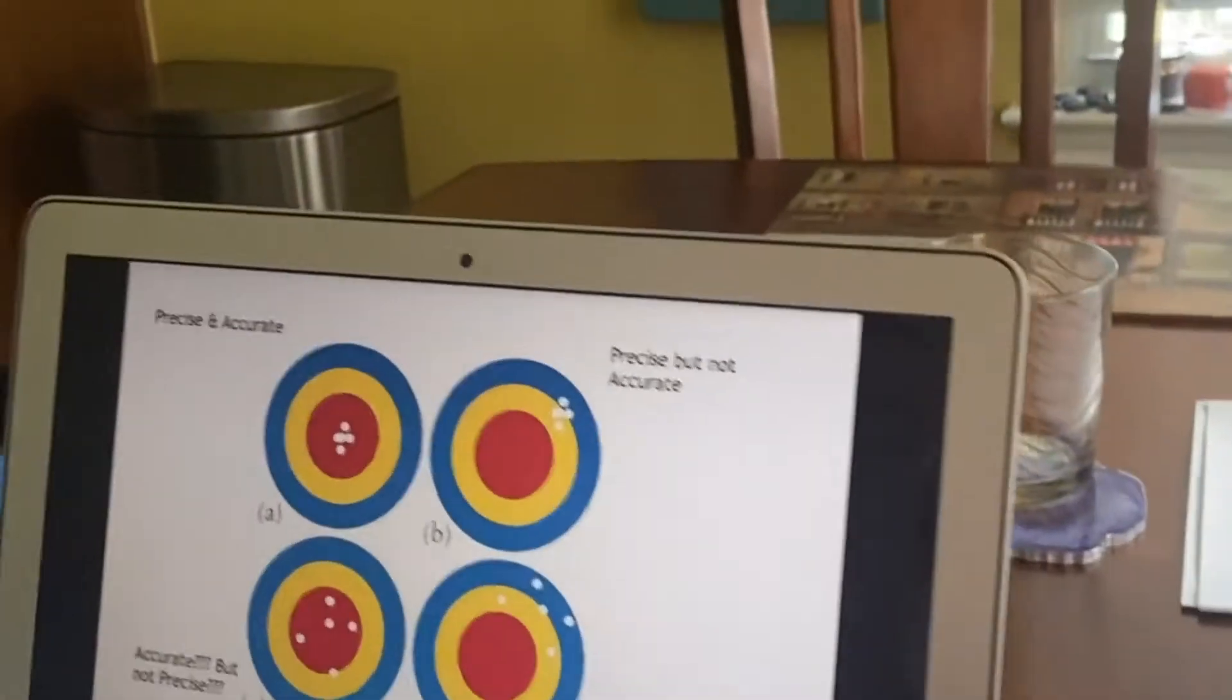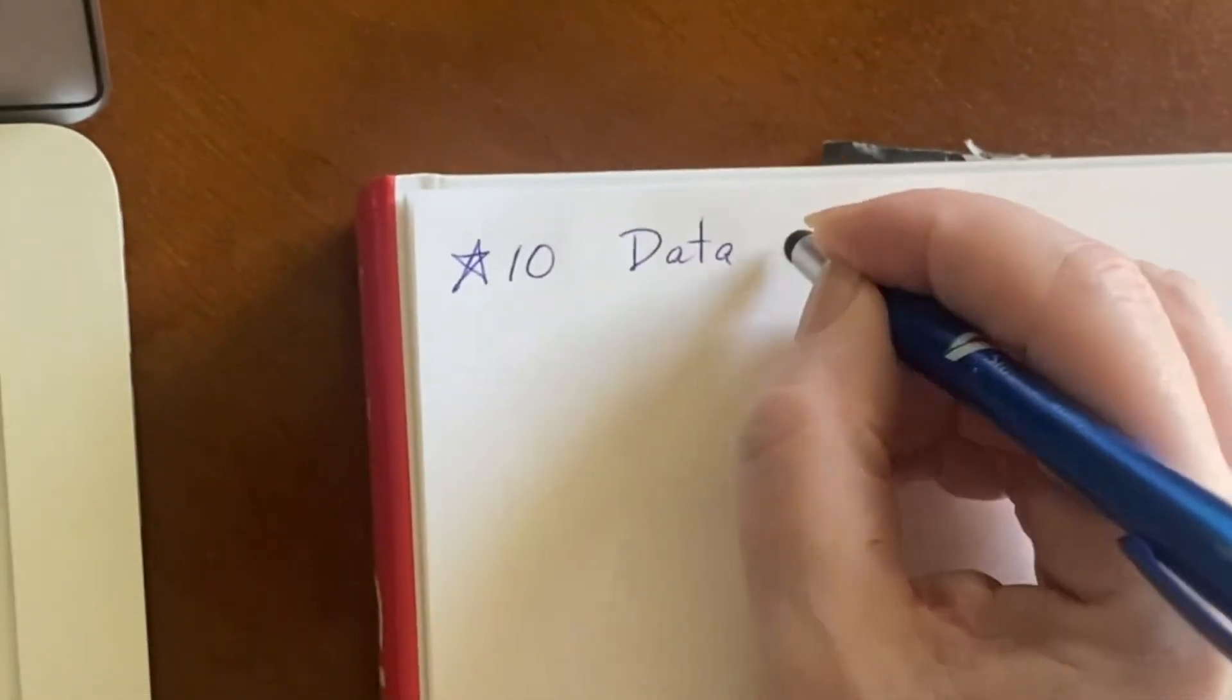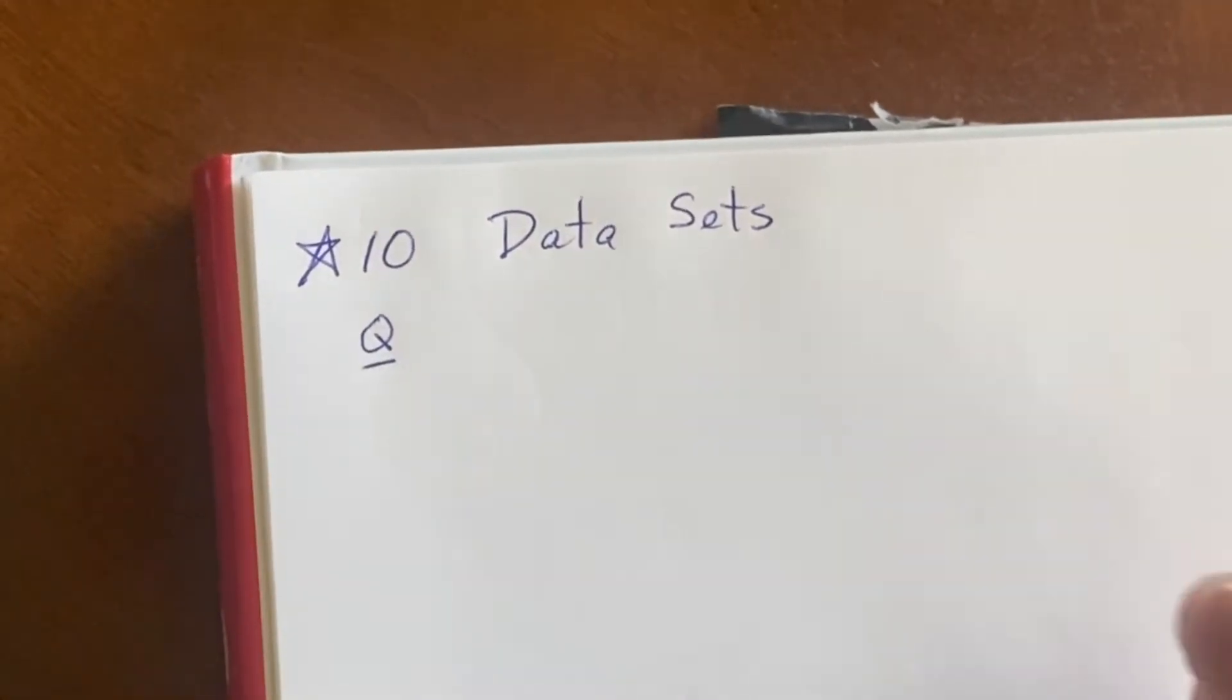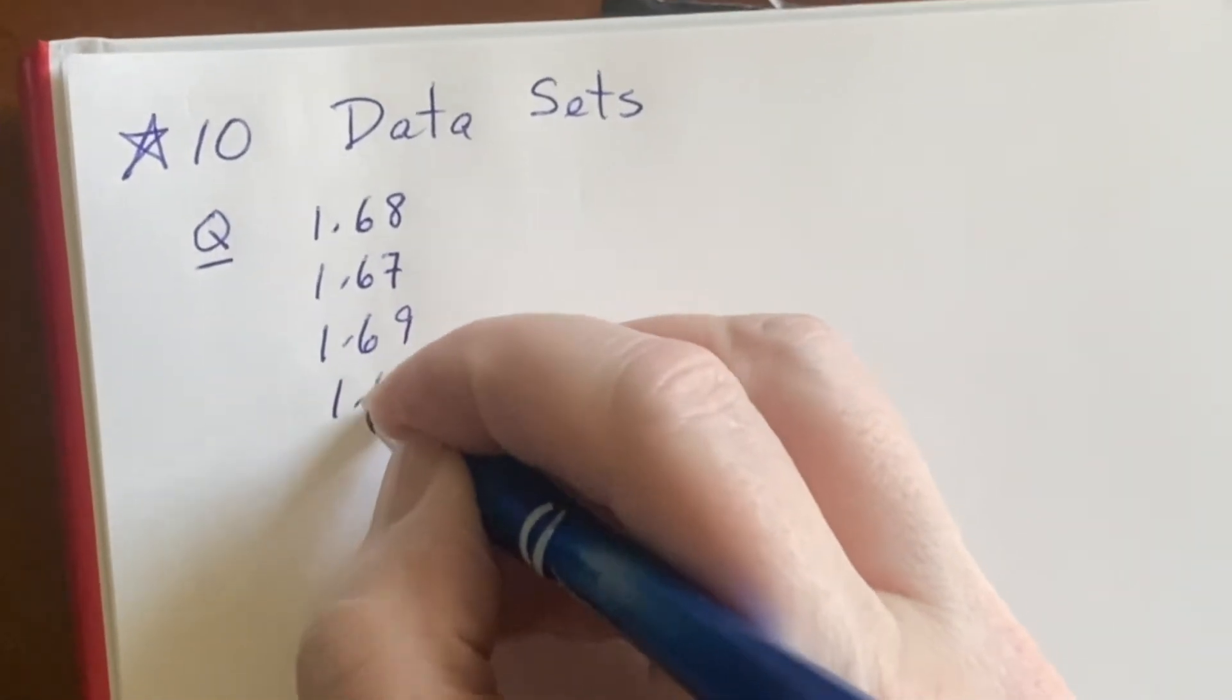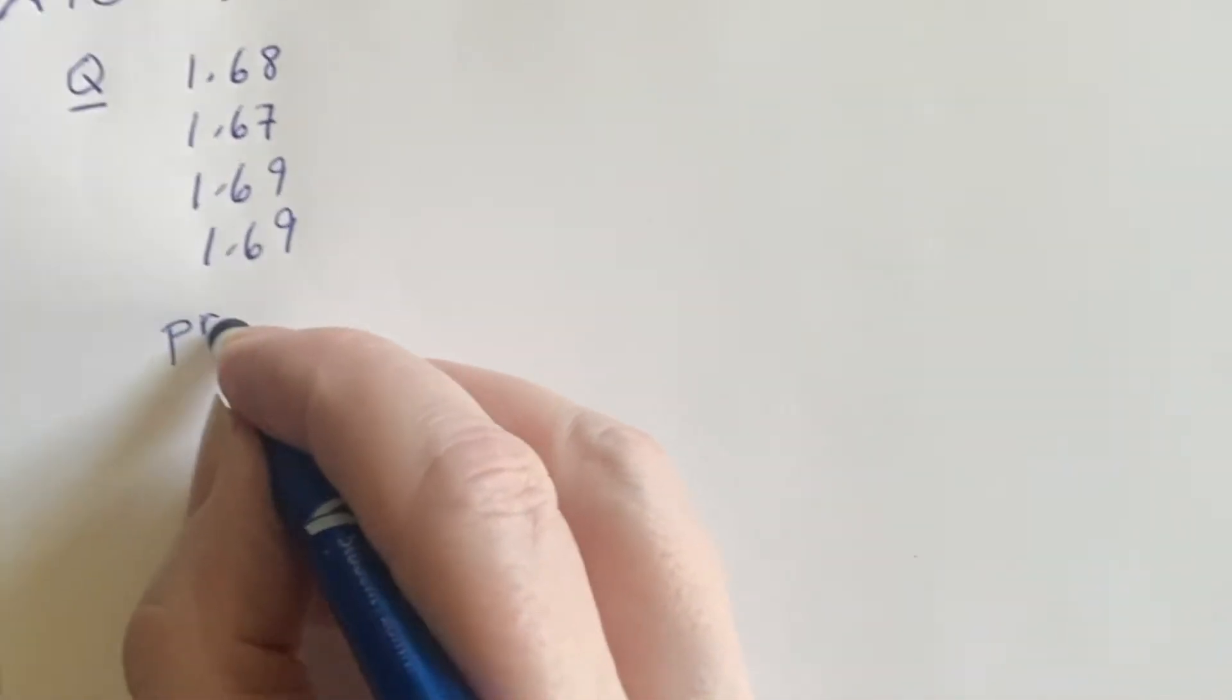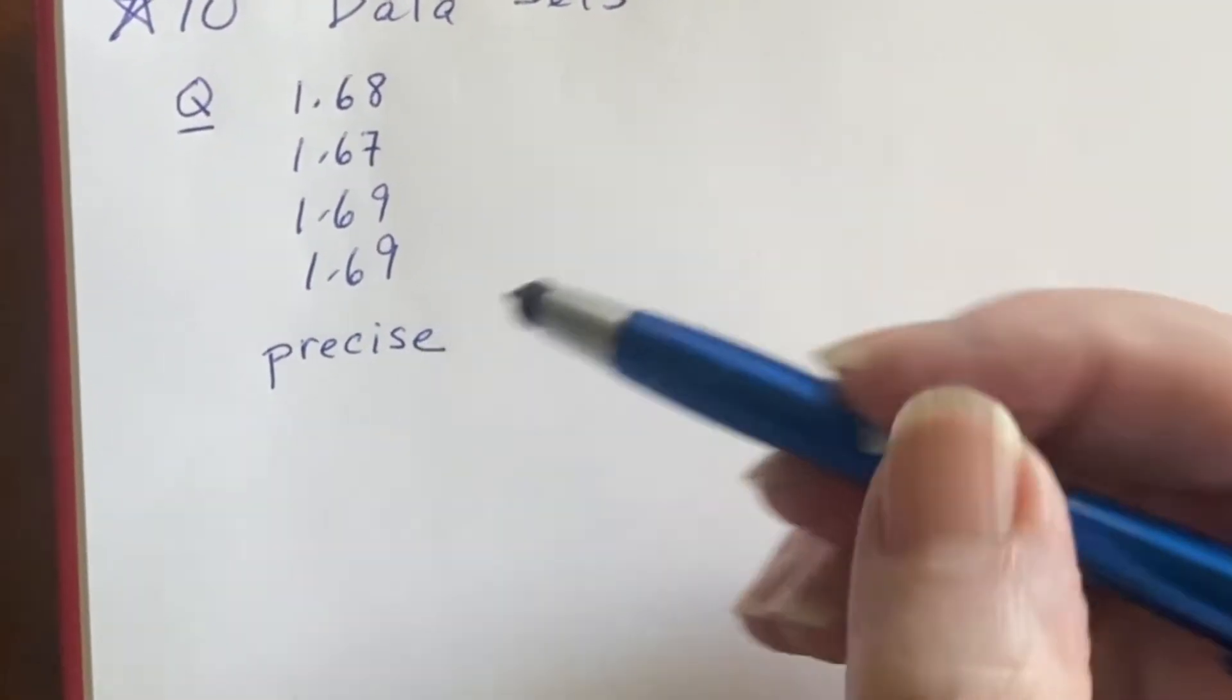Now, what can we do with this as far as something that might show up for you in a lab report, for example, you might have some data sets and you would have to try to figure out from them whether something was accurate or precise. Now, if you are just writing down a data set, I'll call this first one Q. Here's a data set that somebody got 1.68, 1.67, 1.69, 1.69. Oh, they're all very close together. I can just look at this immediately and say that it is precise. I can say nothing yet about accuracy. We'll mention that in a little bit.